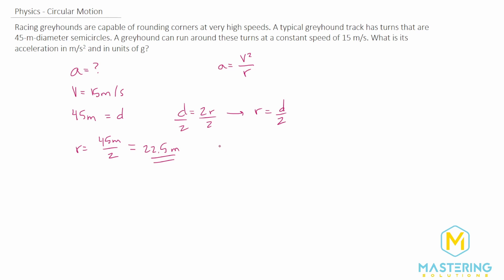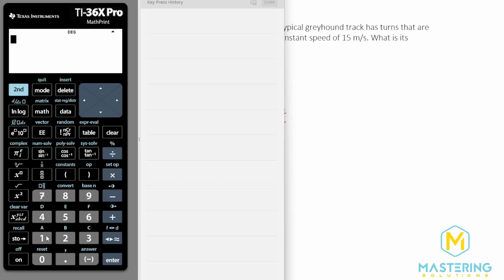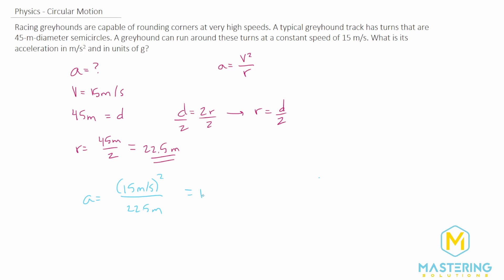And now we simply have to plug everything in. So acceleration equals the velocity, which is 15 meters per second squared, divided by the radius, which is 22.5 meters. 15 squared divided by 22.5 gives us an acceleration of 10 meters per second squared.